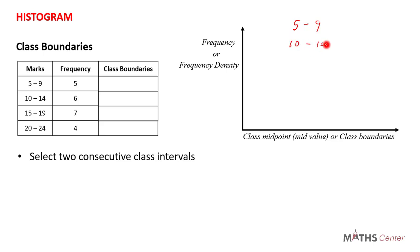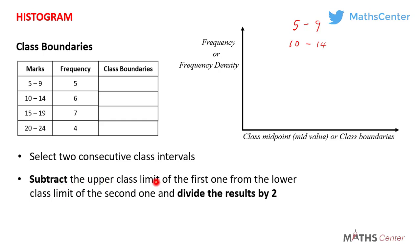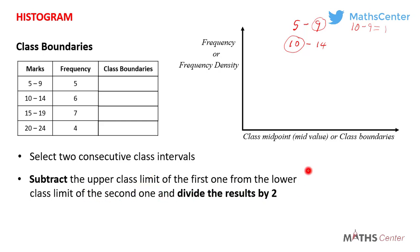After selecting two consecutive intervals, subtract the upper class limit of the first from the lower class limit of the second, then divide by 2. Here the first interval is 5 to 9 and the second is 10 to 14. The upper class limit of the first is 9 and the lower class limit of the second is 10. So 10 minus 9 = 1, divided by 2 = 0.5.